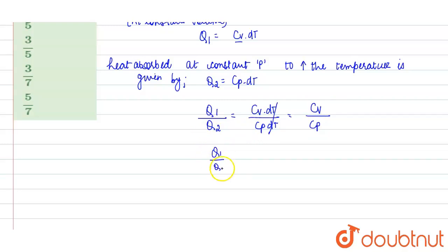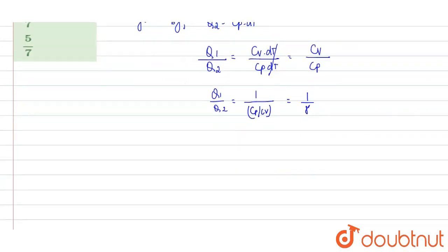So here you can write Q1 upon Q2 equals 1 divided by Cp by Cv. And we know that Cp by Cv is gamma, and for diatomic gas: